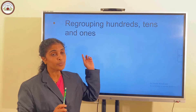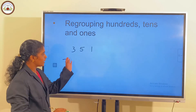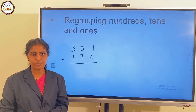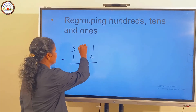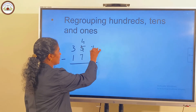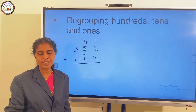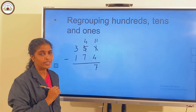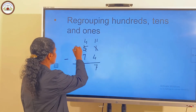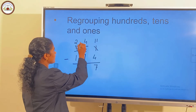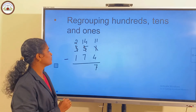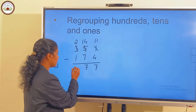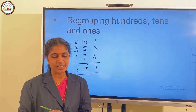Next, we have regrouping of hundreds, tens, and ones places. 351 minus 174. 1 minus 4 is not possible, so we regroup. 5 tens becomes 4 tens and 11 ones. 11 minus 4 is 7. And 4 minus 7 is not possible, so we regroup the hundreds place. Now we have 2 hundreds and 14 tens. 14 minus 7 is 7. And 2 minus 1 is 1. So, the answer is 177.